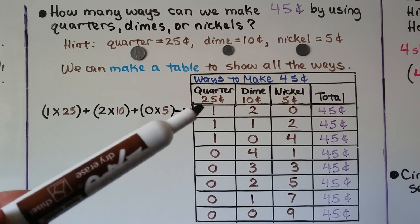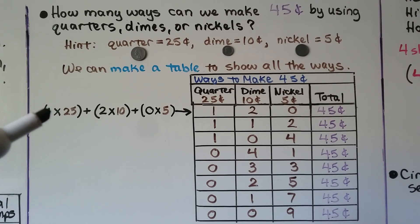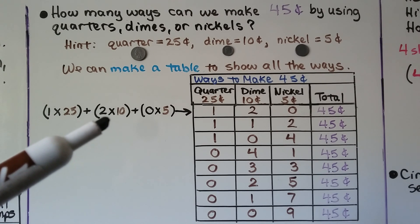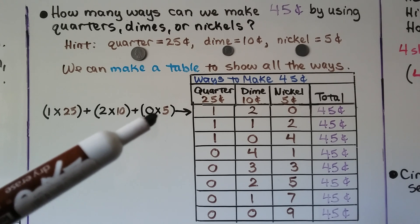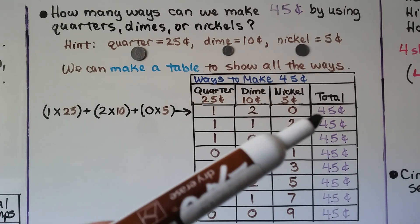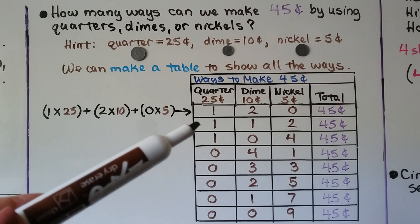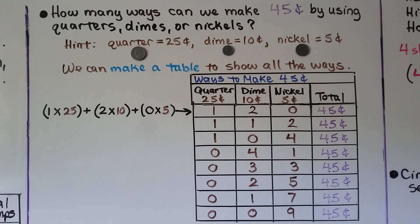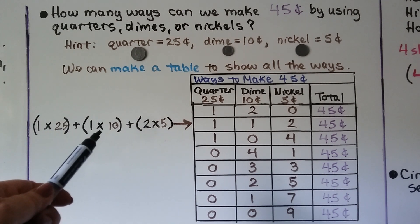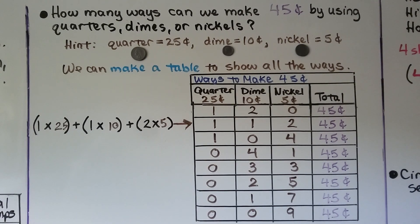If we have one quarter — that's 25 cents — we would need two dimes and zero nickels: one times 25, plus two times 10, plus zero times five. That equals 45 cents. And we could do one quarter, one dime, and two nickels: one times 25 for one quarter, one times 10 for one dime, and two times five for two nickels, and that would equal 45 cents.